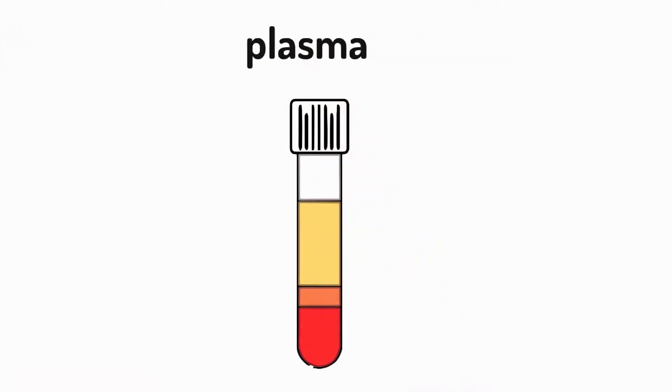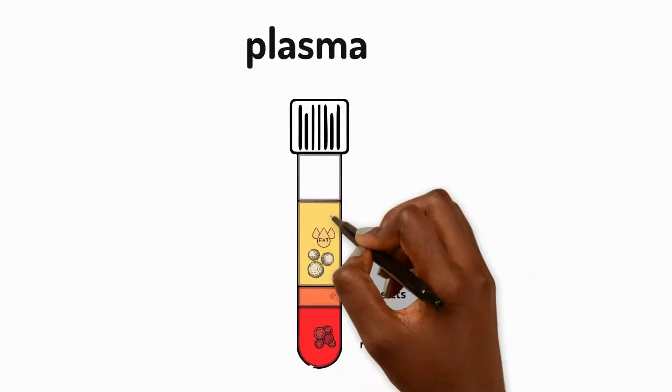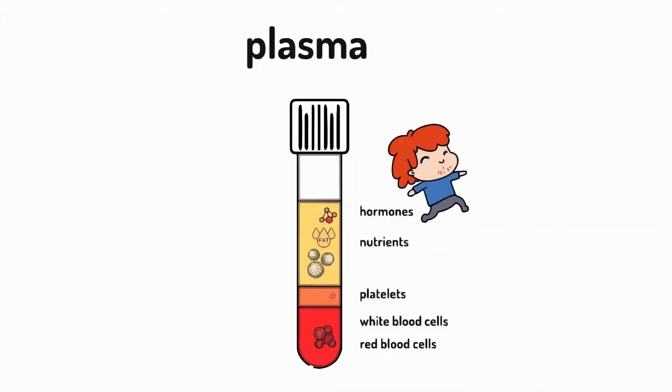Plasma is the yellow-coloured liquid part of blood, and it carries the blood cells, platelets, and nutrients, and even contains certain hormones, like those that control puberty.